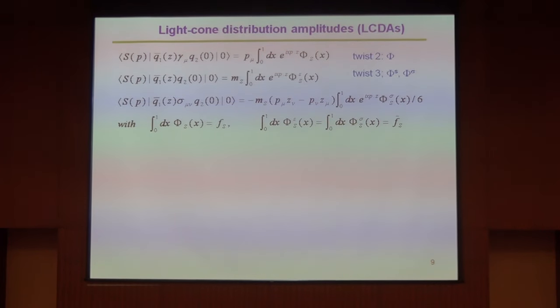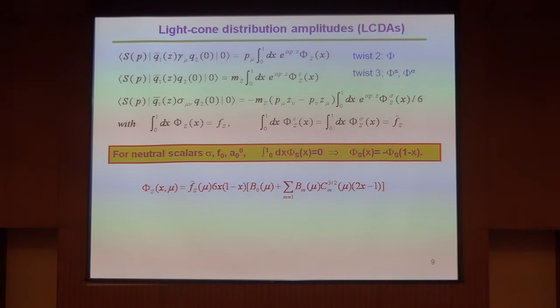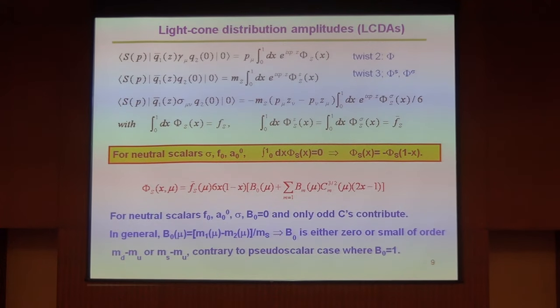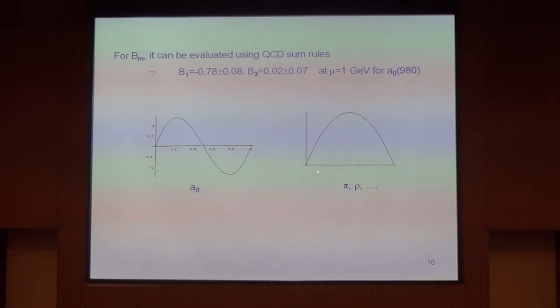For the light-cone distribution amplitude, we have to know the wave function. Just like in QCD, you expand the wave function in terms of Gegenbauer polynomials and integrate the Gegenbauer moment in the end. Unlike for pseudoscalar mesons where the Gegenbauer coefficients are even like a₀, a₂, a₄, for light scalar mesons the dominant term is followed by the odd terms a₁, a₃. So the expansion based on the wave function is symmetric, but for a₀ the wave function is anti-symmetric.